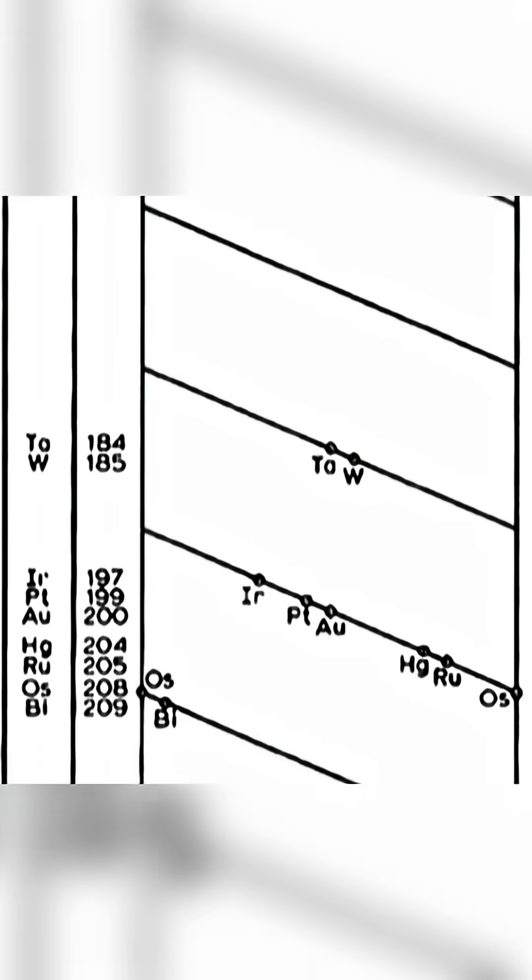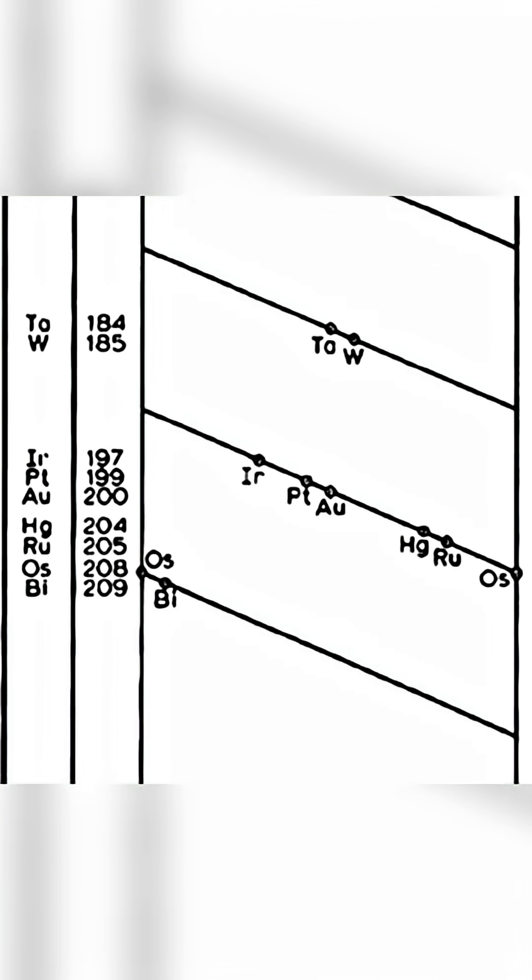He included every known element in his table and spotted something interesting. For some reason, there were several cases where elements that were very similar to each other seemed to coincidentally line up in perfect vertical columns on his table.